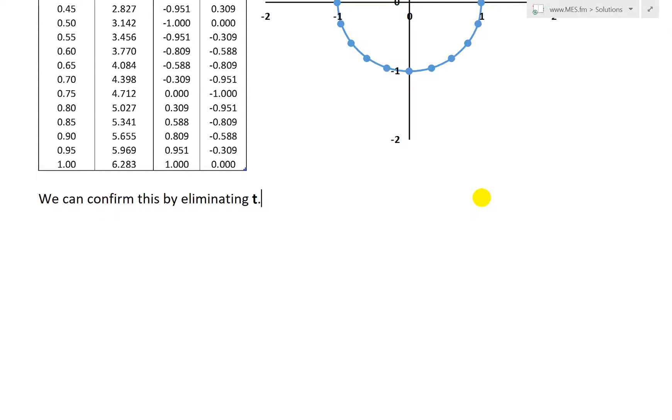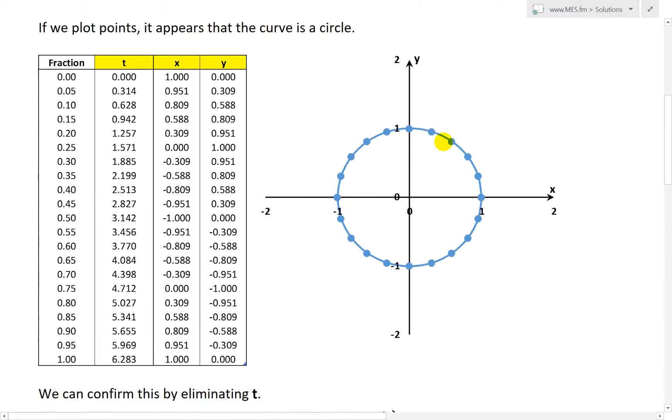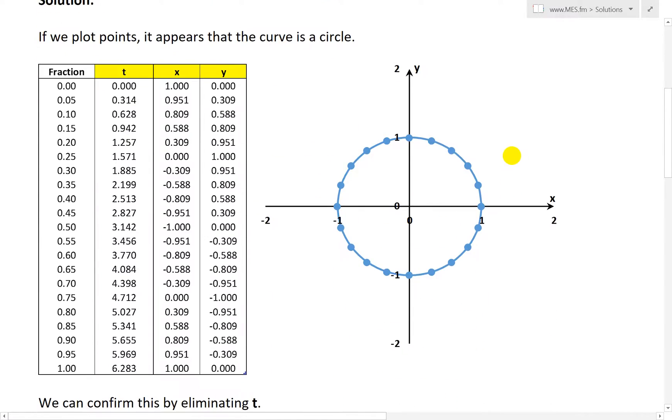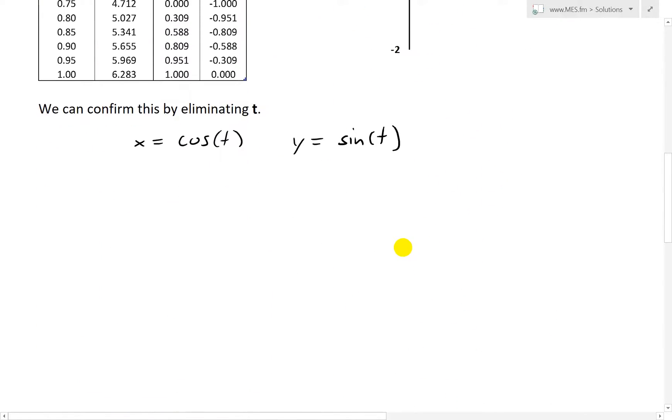But we can confirm this that it's actually a circle by eliminating t. So what we do is, let's write down what we have. So x equals cosine of t. And we have y is equal to sine of t. So if we go back up here, just to double check, so it is cosine of t and sine of t.